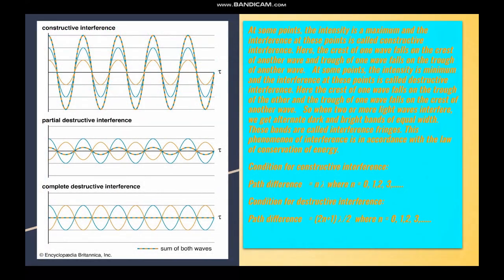Now coming to constructive and destructive interference. Constructive interference means the peak of one wave coincides with the peak of another wave, and the valley of one wave coincides with the valley of another. This gives a resultant amplitude that is larger—the addition of both amplitudes. In complete destructive interference, the peak of one wave coincides with the valley of another wave. If the amplitudes are the same, they cancel each other out completely. If the amplitudes are not the same, you get partial destructive interference with amplitude less than both original waves.